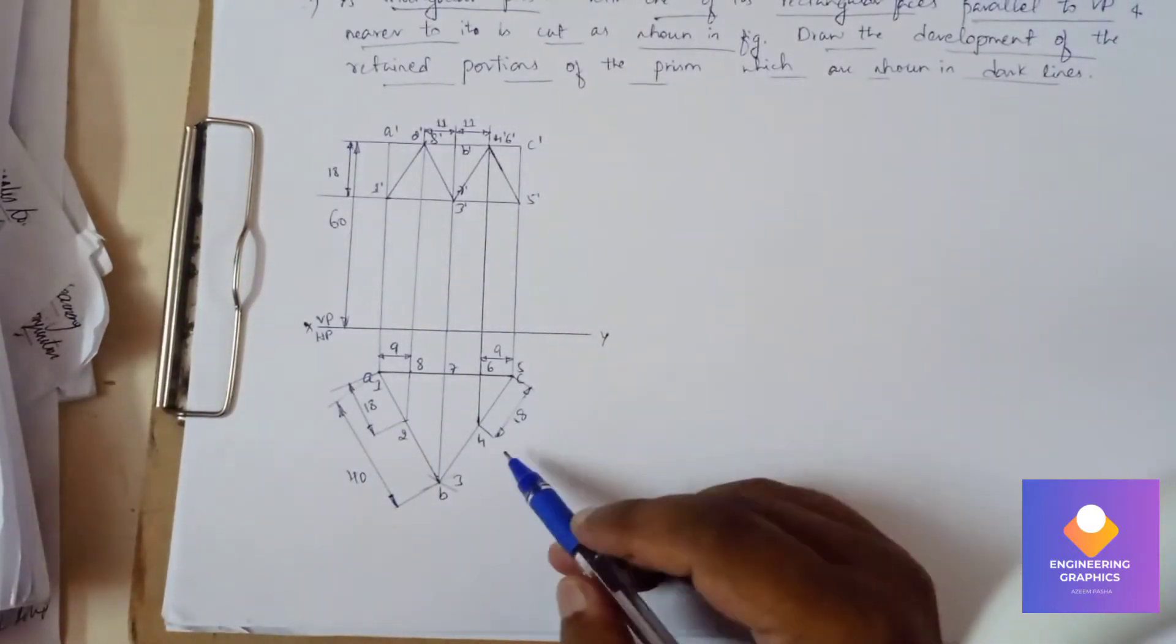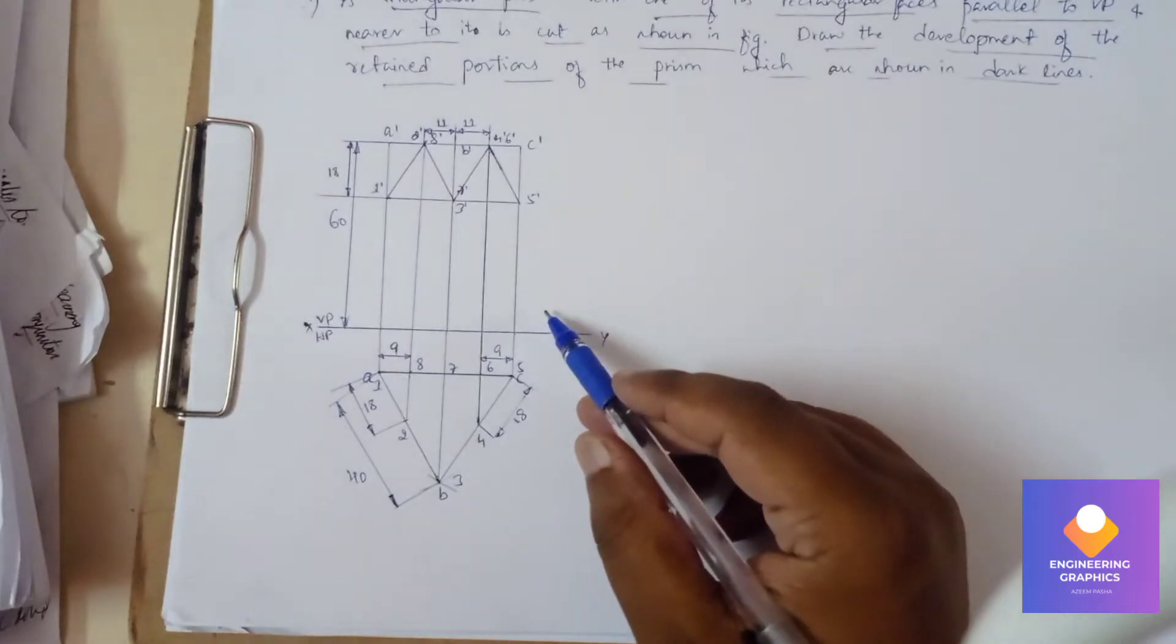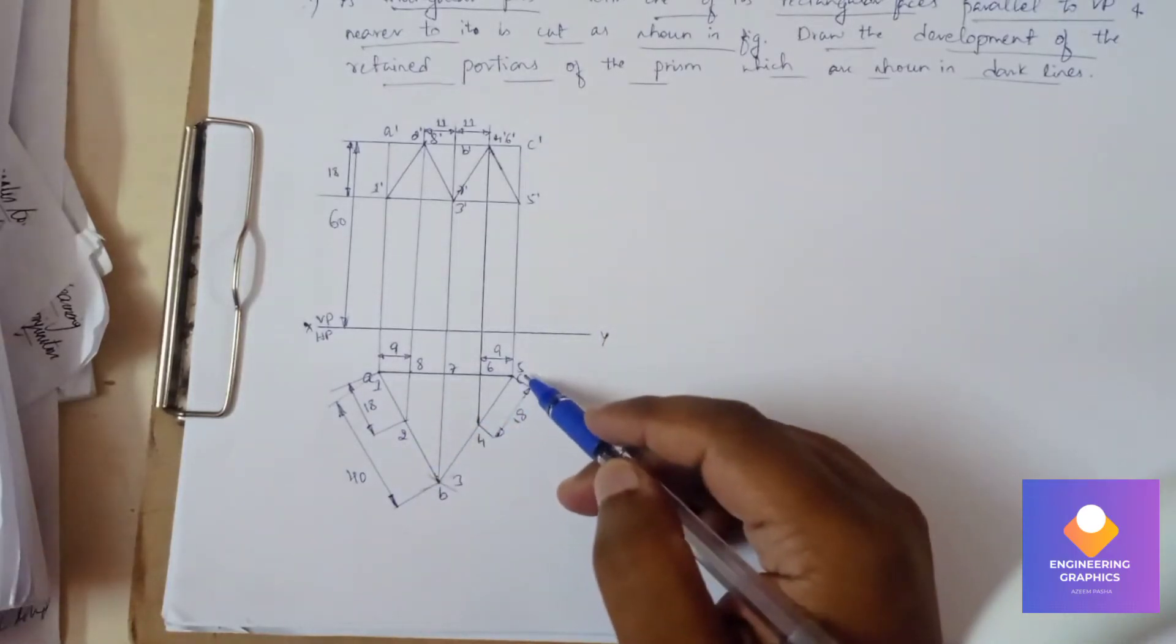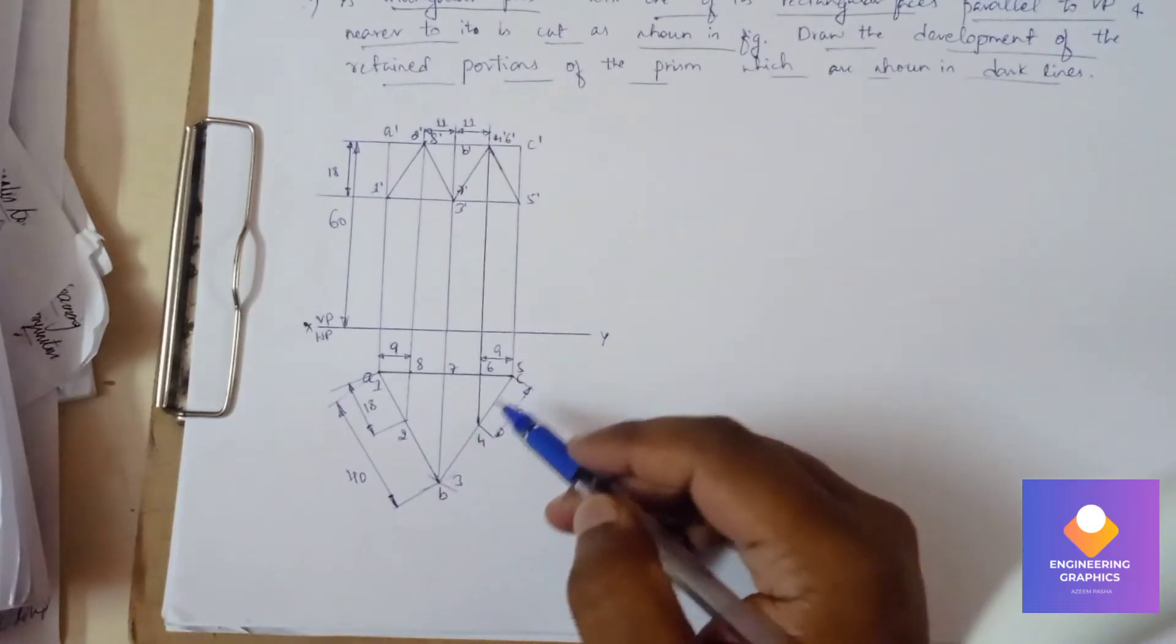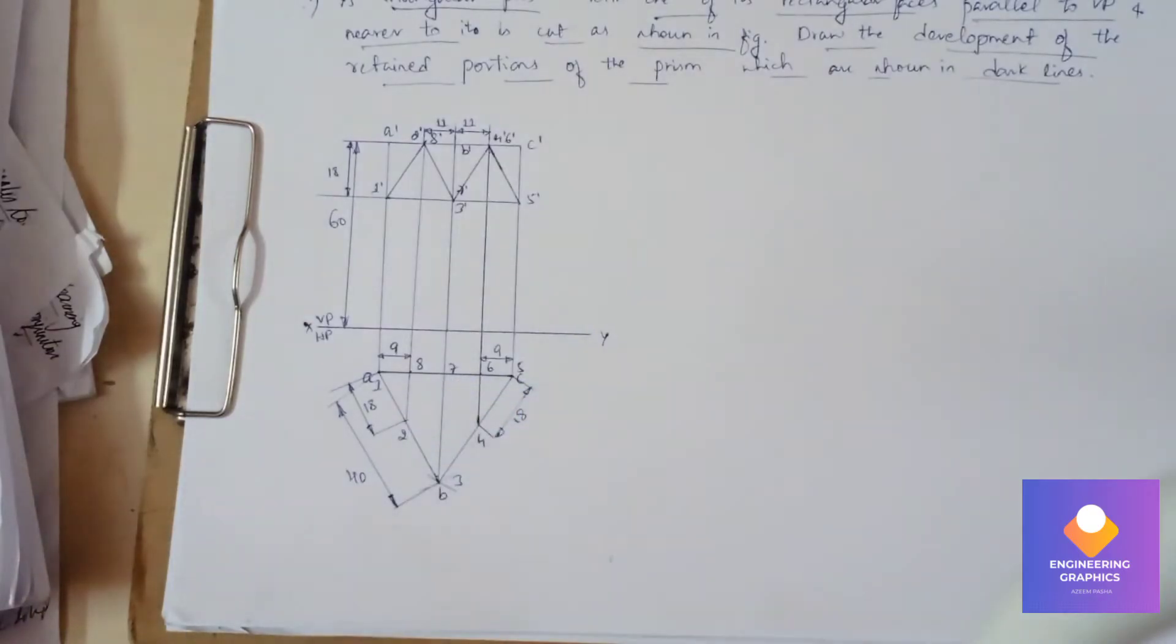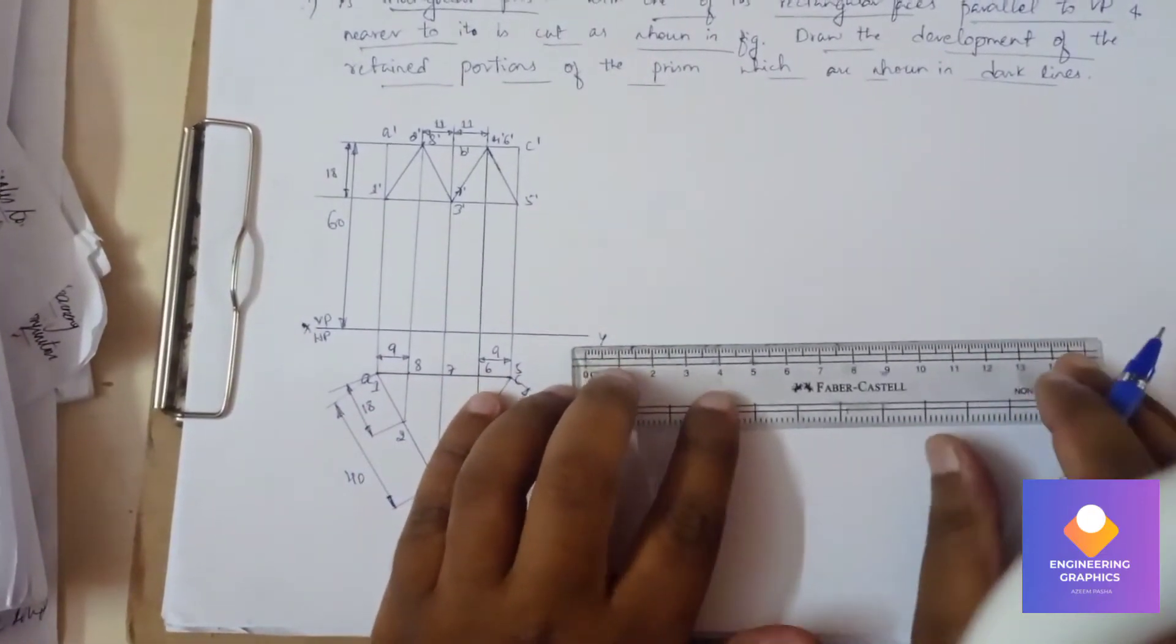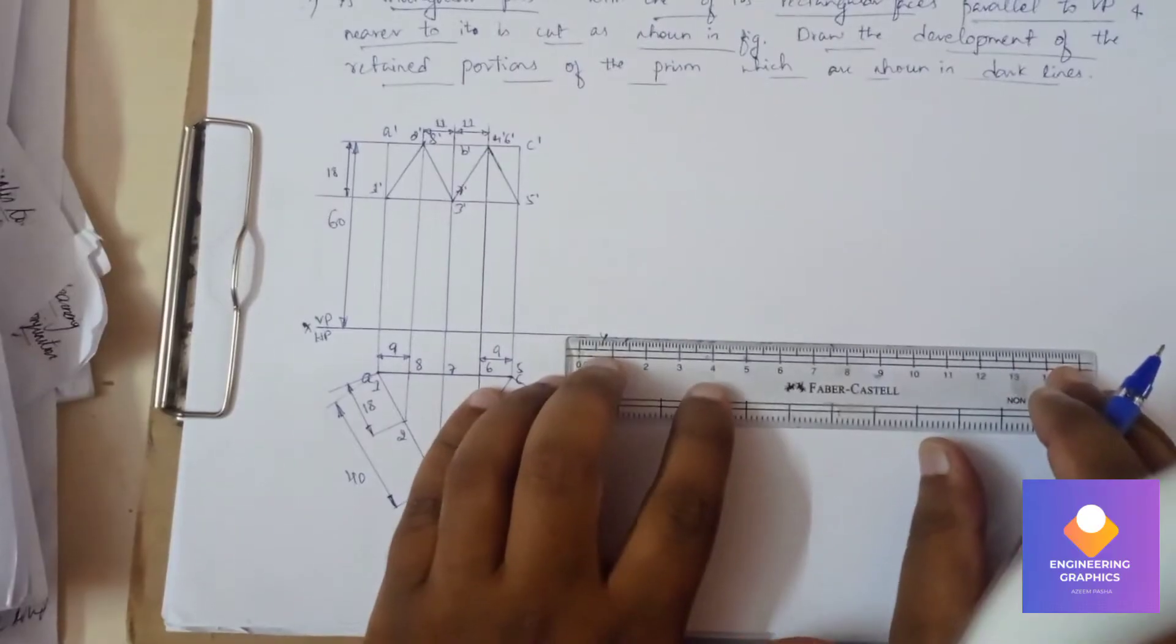So this is what is given in the question. Triangular prism of dimension 40, axis length 60. It is cut as shown in the figure. You can see the numbers here, how it is cut and marked here. Now we need to draw the development of this. This is problem number 1 in the solution book.